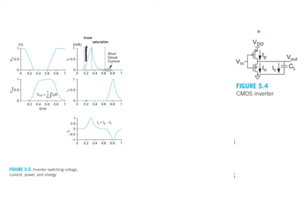To study where energy and power is consumed, we must consider the input voltage to the gate, the output voltage to the gate — which is also the voltage developed across the capacitor — and which also gives us the drain-to-source voltage across the PMOS transistor, as well as the drain-to-source voltage across the NMOS transistor. We also consider the current flowing through the PMOS transistor, the current flowing through the NMOS transistor, and the current flowing through the capacitive load. This is because power is equal to current times voltage.